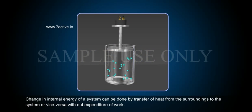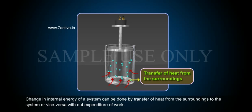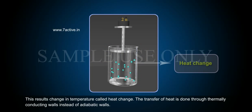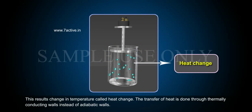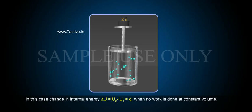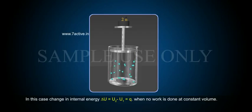Change in internal energy of a system can be brought about by transfer of heat from the surroundings to the system, or vice versa, without expenditure of work. This results in a change in temperature, called heat change. The transfer of heat is done through thermally conducting walls instead of adiabatic walls. In this case, change in internal energy, Delta U, equals U2 minus U1, equals Q.